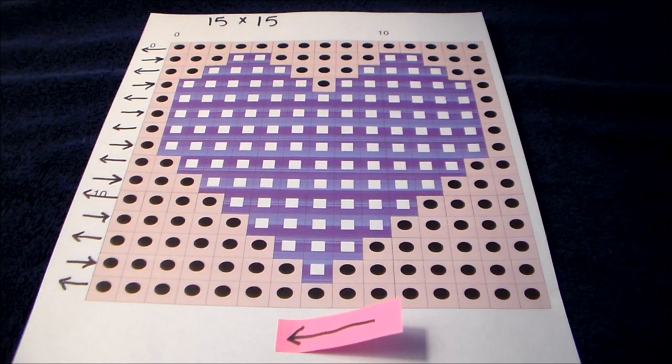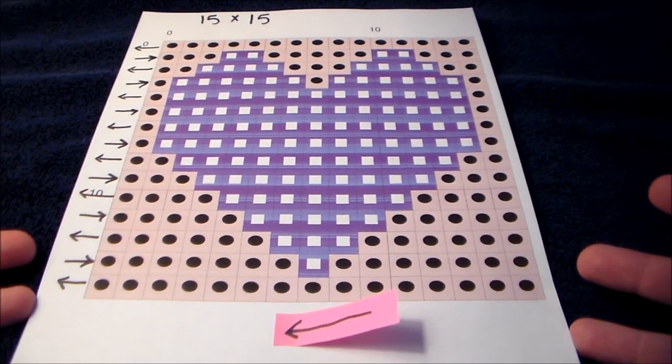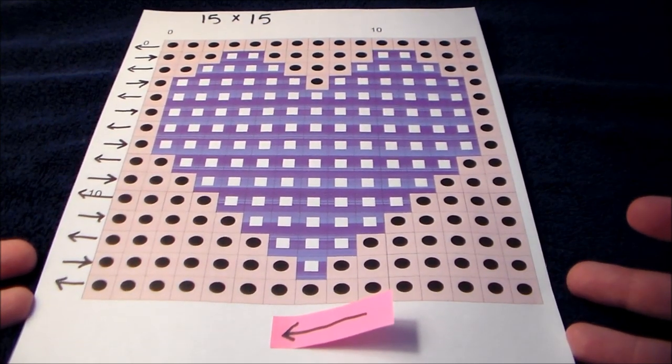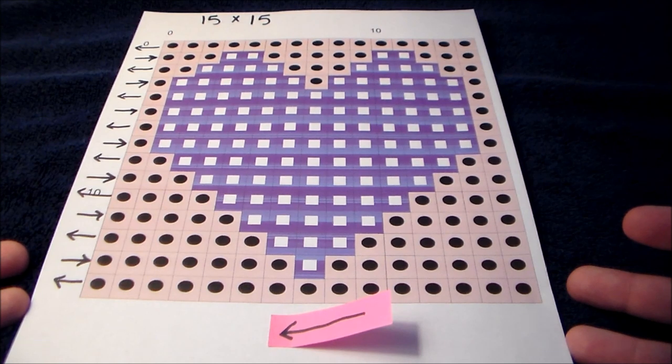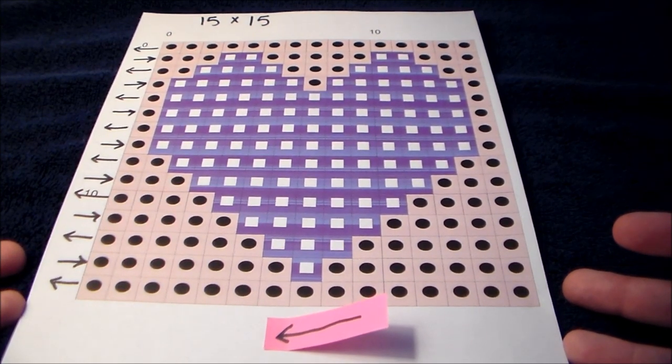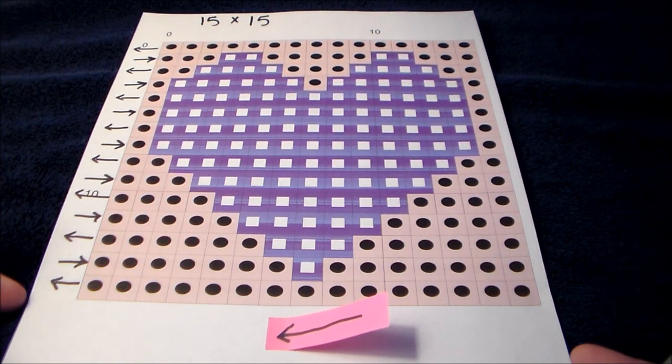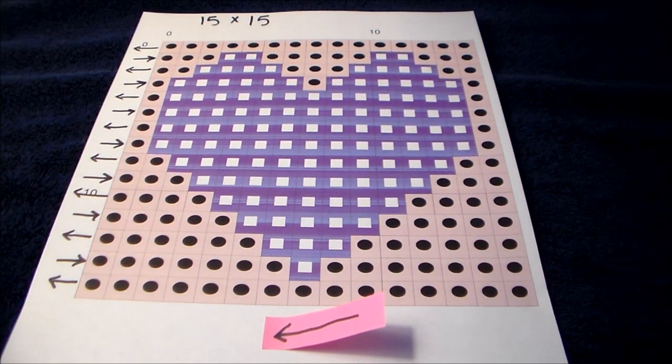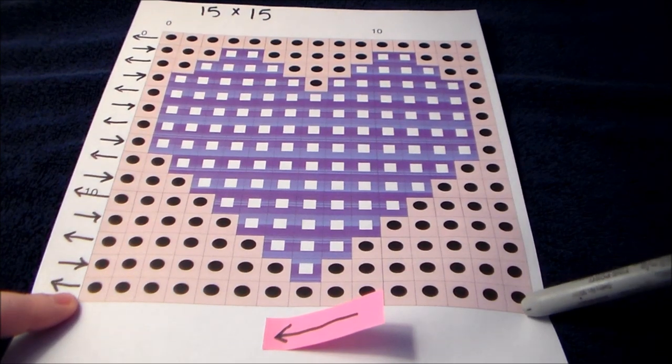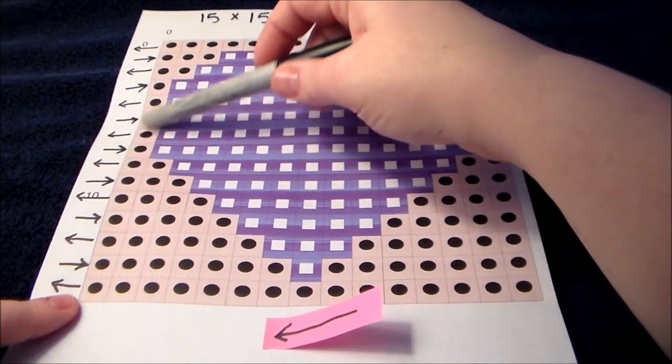So when you print your pattern out, the first thing you're going to want to do is prepare it for your project and take every step that you can to minimize the amount of errors that you might make. So what I recommend is first of all, identify the size of your pattern and write it at the top if it's not written already. So we know that our graph pattern according to my details are 15 by 15. So there's 15 stitches across by 15 rows up.